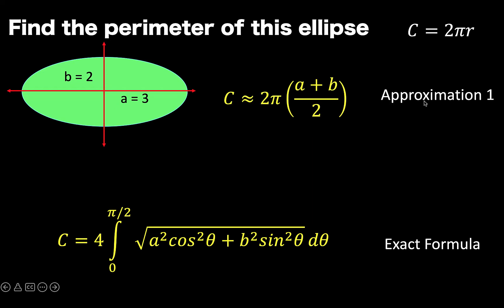This first formula is good enough to approximate the perimeter of an ellipse. It is based on the fact that a circle is a special kind of ellipse when the values of a and b are equal. Since we know that the circumference of a circle is given by 2 pi r, then r can be approximated by the average of a plus b, where a is half the length of the major axis and b is half the length of the minor axis.